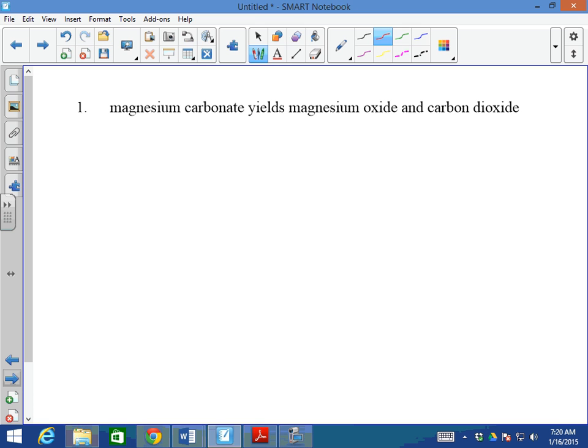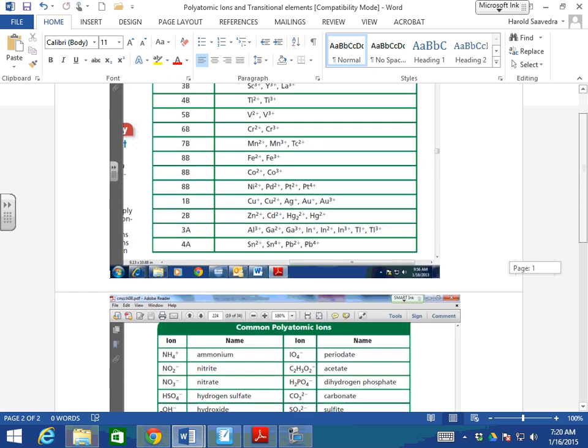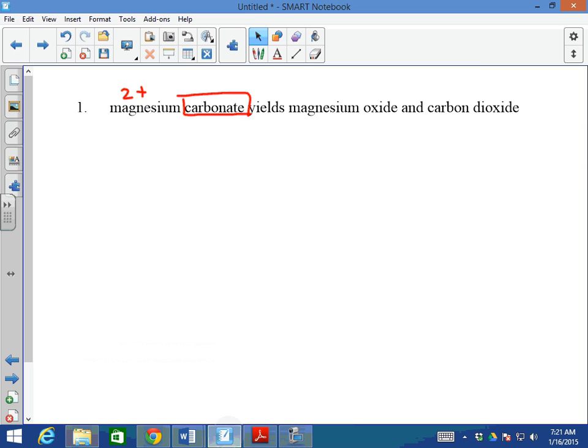Magnesium, charge of 2 positive. Carbonate. Carbonate is a polyatomic ion. It is found on our list of polyatomic ions. CO3, charge of negative 2. Let me write that down. Mg CO3, carbonate. In this case, they're both 2s. Those 2s cancel. I don't need to write anything to magnesium or carbonate.